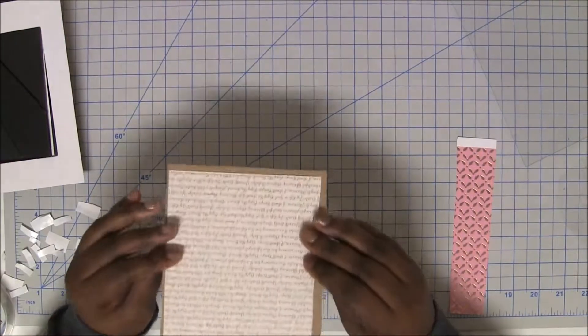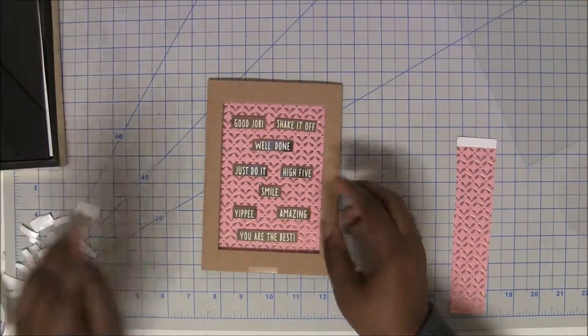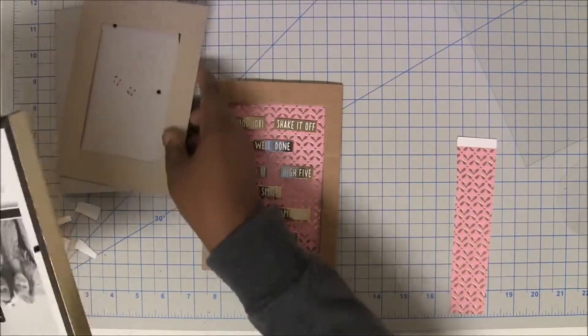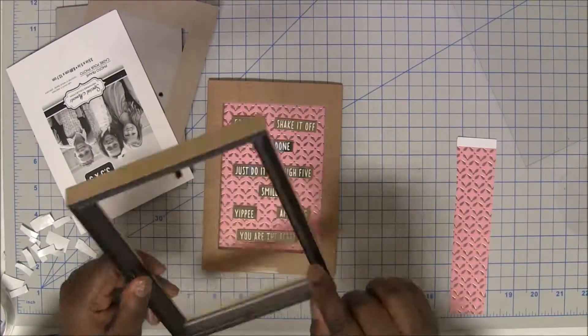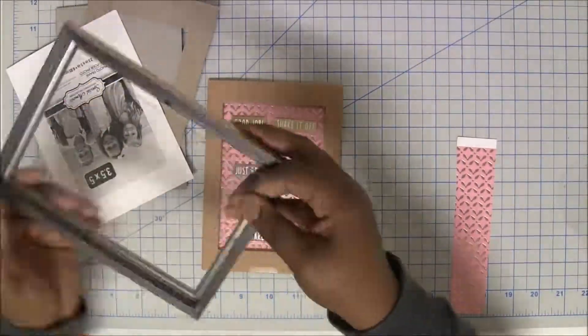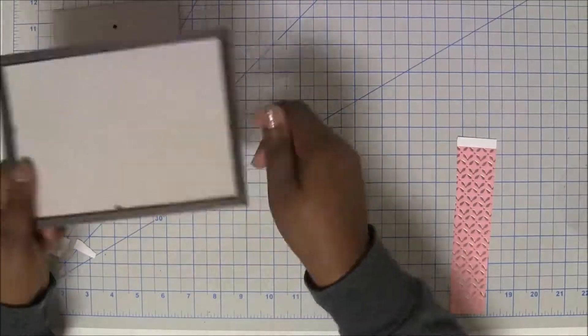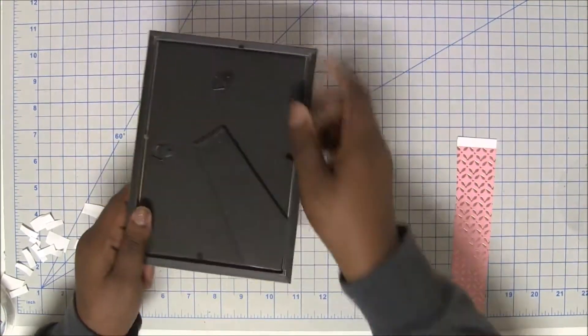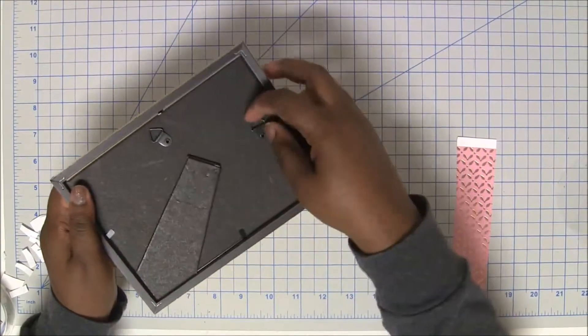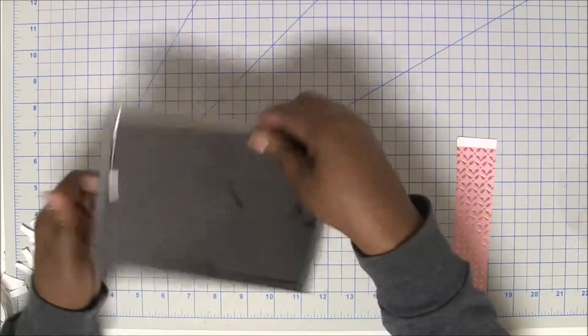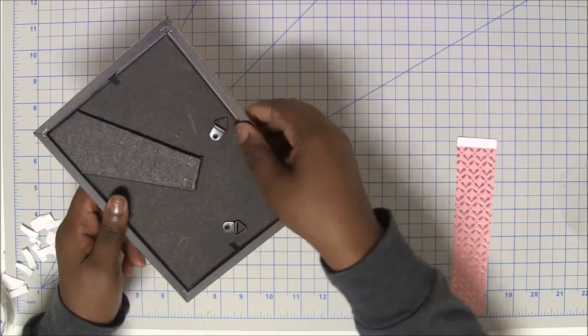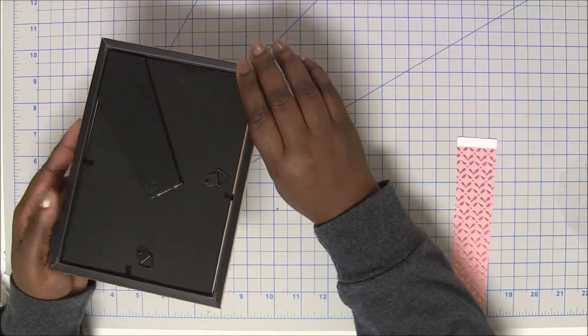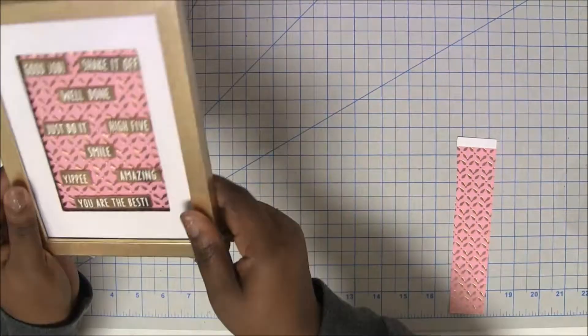All right. So then once you have all your stickers down, you can go ahead and put your frame back together, put your pieces down, and then you can hang this up using these hooks here or you can stand it up on your desk. Either way it's going to be a nice addition to anyone's room, your office, etc. So here's the big reveal. Okay, that is adorable. Come on, that's adorable.